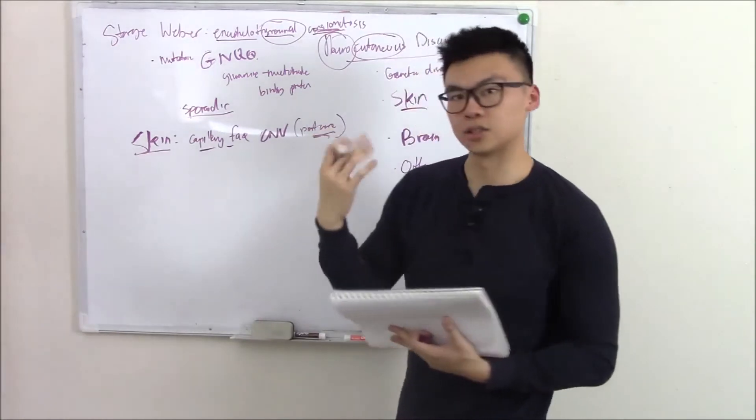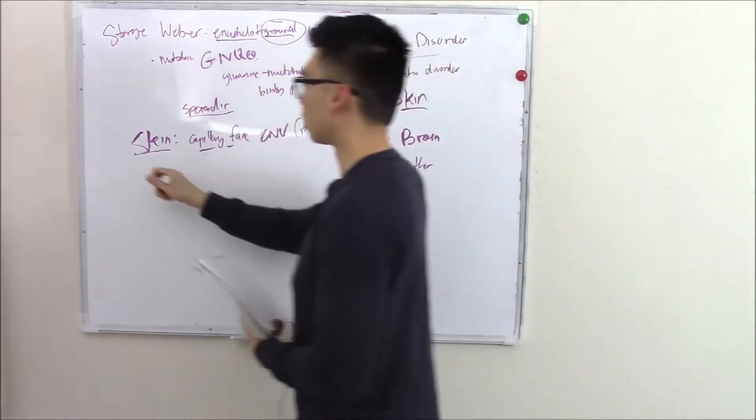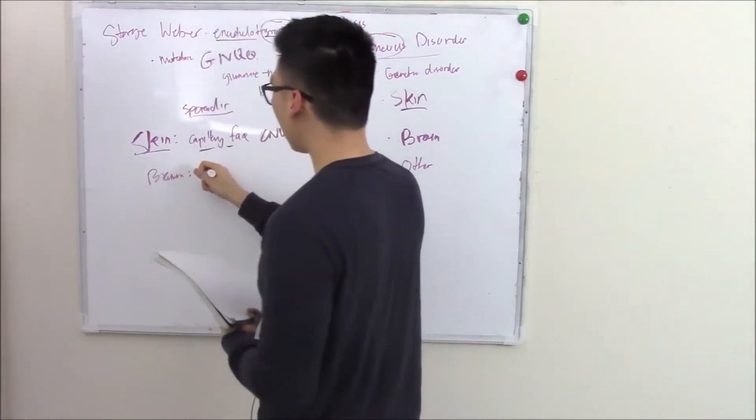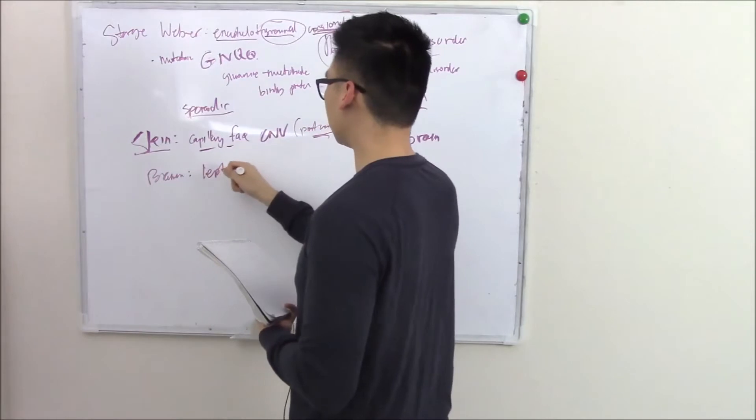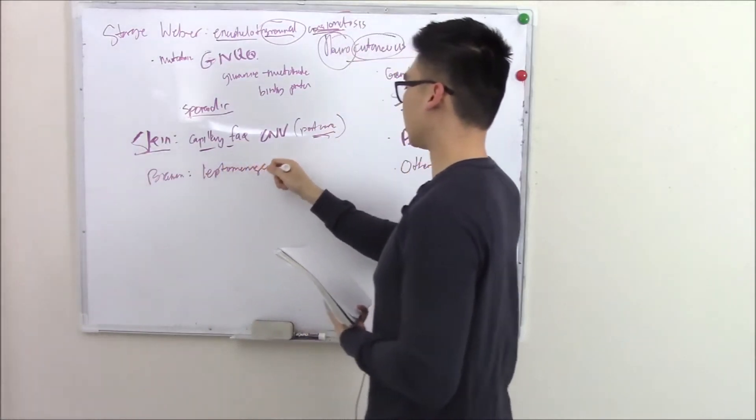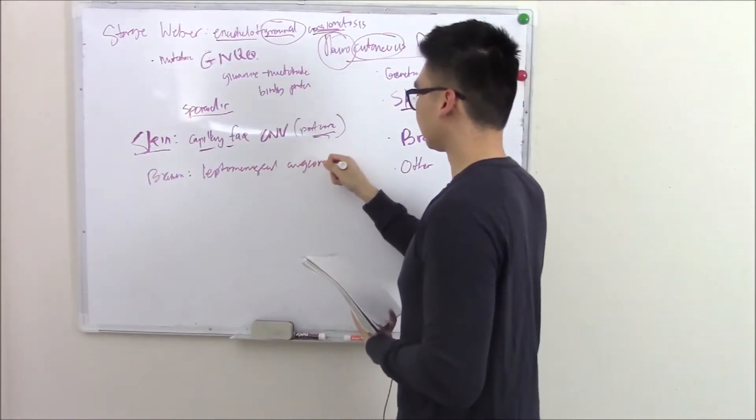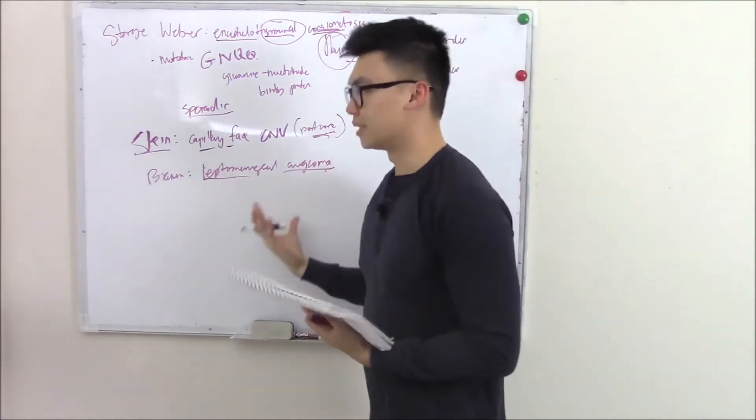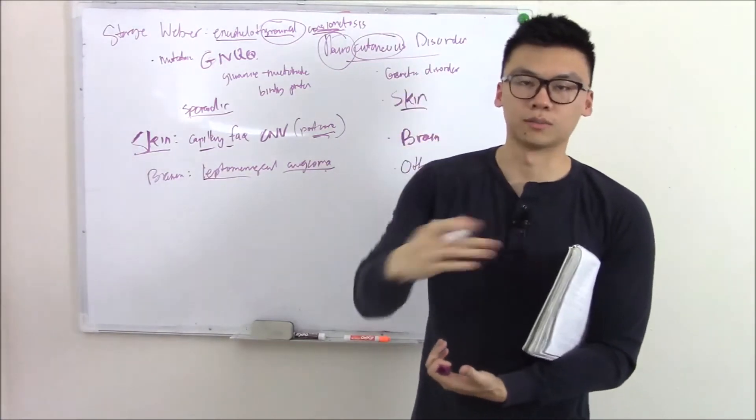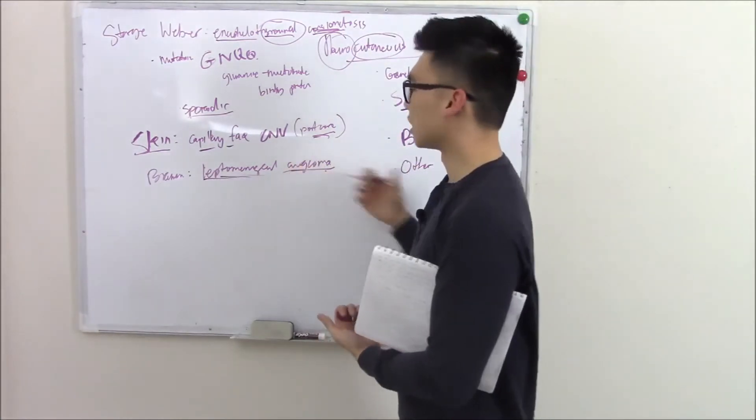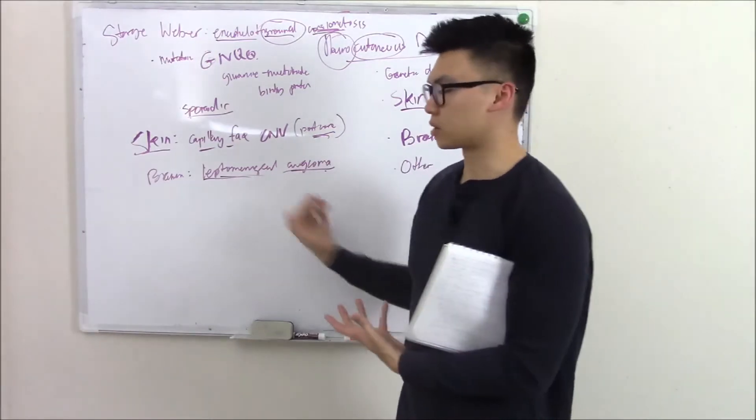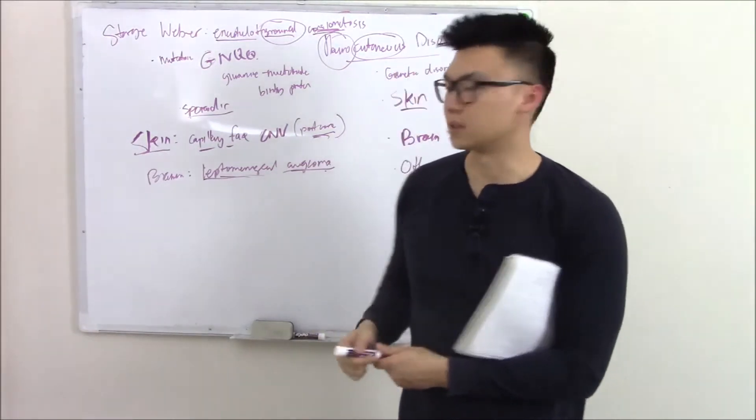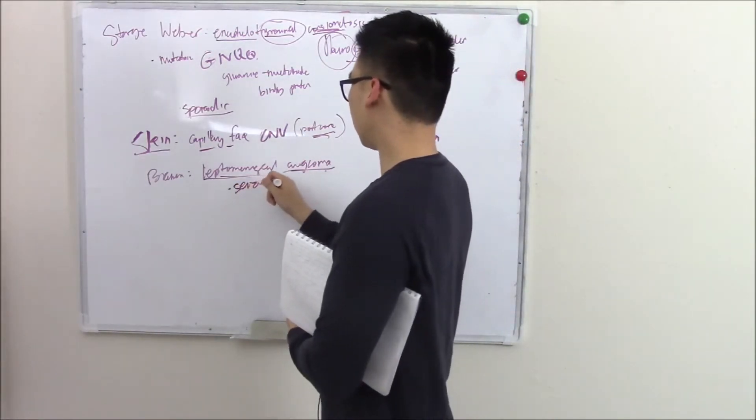You recognize the port wine stain on the patient. Now you want to know, what's going on in the brain? In the brain, you're going to have these mutated blood vessels causing angiomas, in particular, leptomeningeal angioma. Leptomeninges is just your arachnoid and pia mater. That's a fancy way of saying there's angioma in your arachnoid and pia mater. That can compress your brain, cause seizures. These patients will have seizures at birth, have that port wine stain. Very classic.